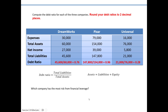The last part of the problem goes beyond number crunching and asks us to interpret the results. The question asks which company has the most risk for financial leverage. Financial leverage is a measure of how much debt — how much of your assets are being financed by debt.